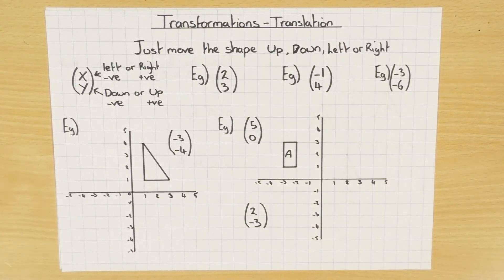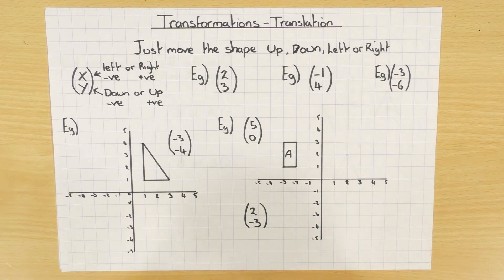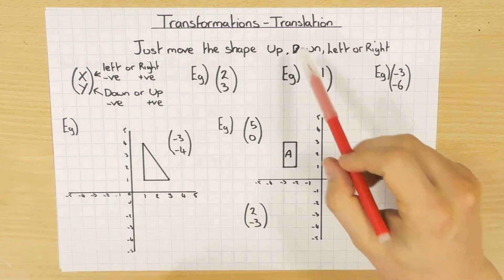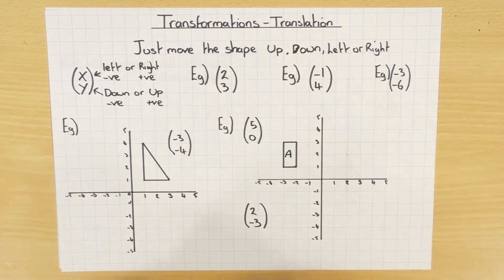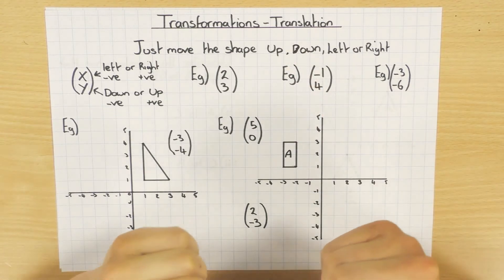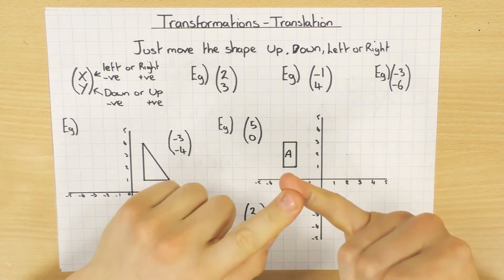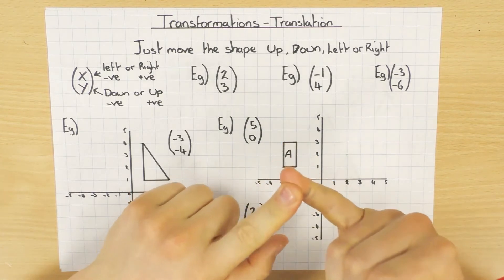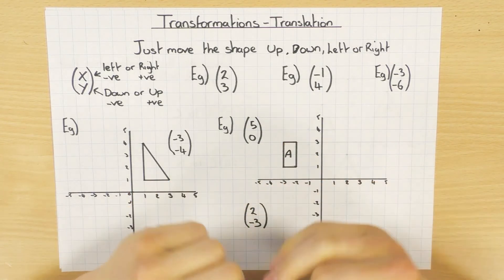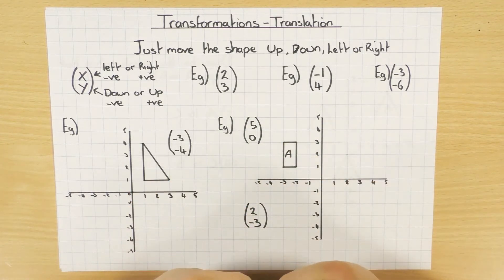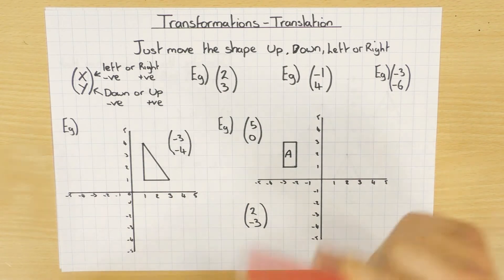In this video we're going to have a look at transformations, but a little bit more specifically translations. There are four different types of transformation: translation, which is this one today, rotation, reflection, and enlargement.